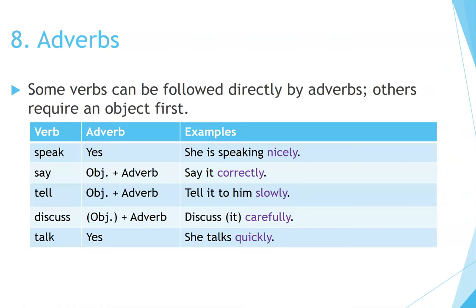Number 8: Adverbs. Some verbs can be followed directly by adverbs; others require an object first. Speak — yes: She is speaking nicely. Say — object plus adverb: Say it correctly. Tell — object plus adverb: Tell it to him slowly. Discuss — sometimes object plus adverb: Discuss it carefully; sometimes we can say 'discuss carefully.' Talk — yes: She talks quickly.